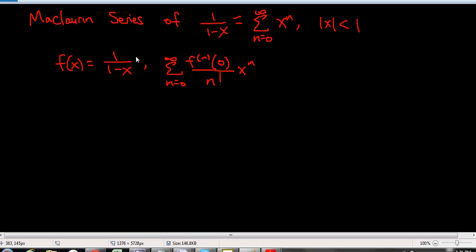I've already taken a few steps here and written out the function that I have along with f to the nth derivative evaluated at 0 over n factorial times x to the n. So this is my Maclaurin series. The Maclaurin series is always evaluated at 0, whereas in Taylor series it's just any number. So you can think of Maclaurin series as a specific kind of Taylor series.